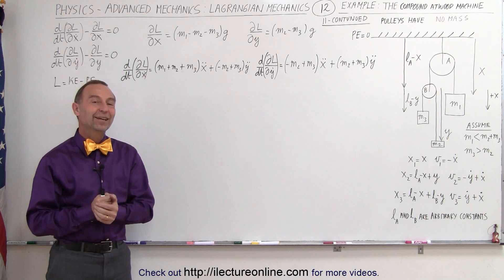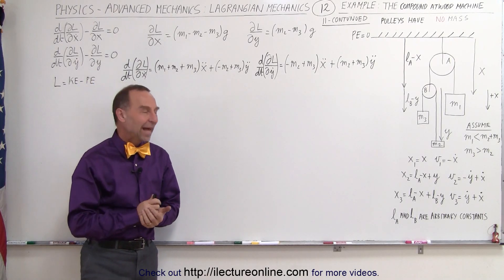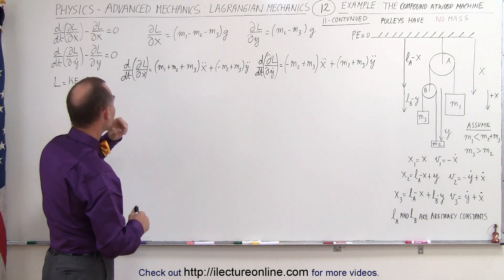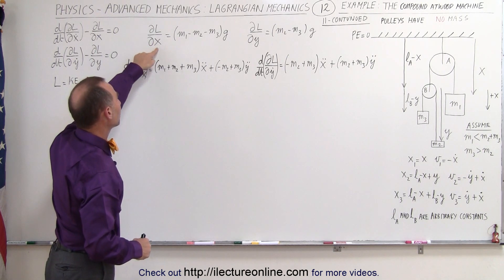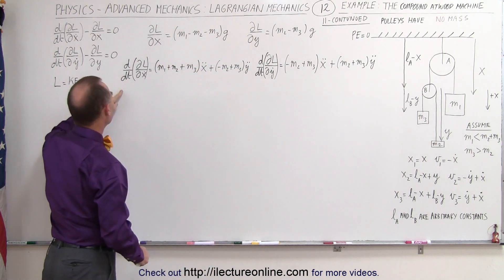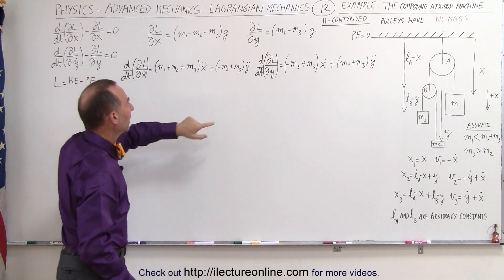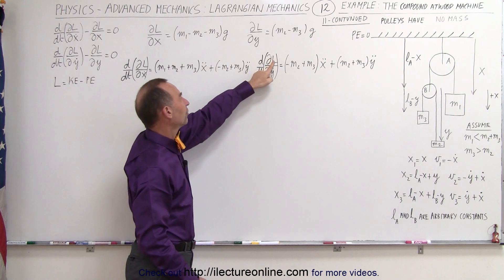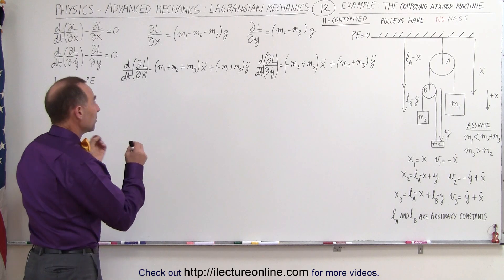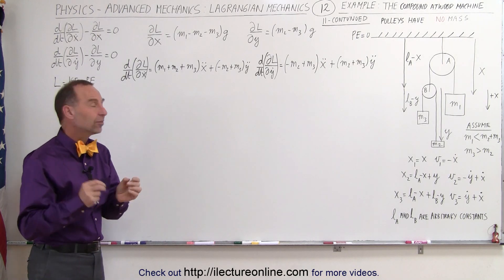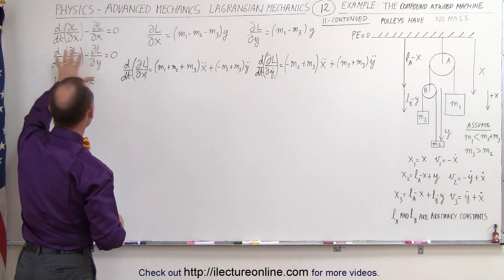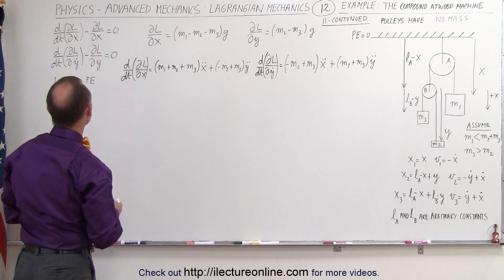Welcome to Electronline. Here's part two of our compound Atwood machine. In the previous video we got this far — we got the partial derivative of the Lagrangian with respect to x, the partial with respect to y, the time derivative of the partial with respect to x-dot, and the time derivative of the partial of L with respect to y-dot. Now we're going to come up with two equations of kinematics that will describe the motion of the Atwood machine by utilizing this form of the equation.